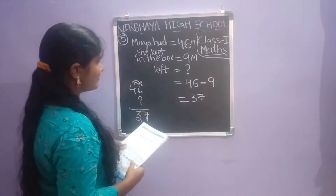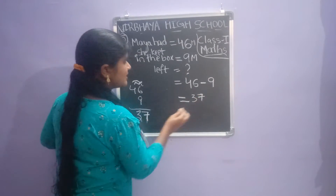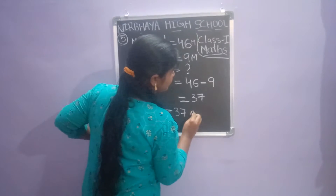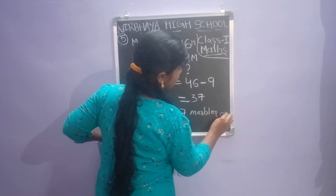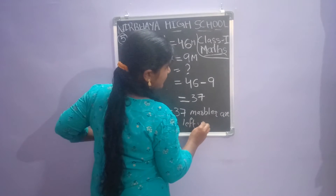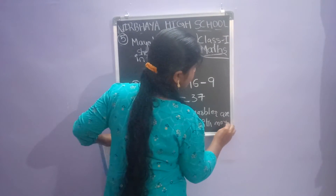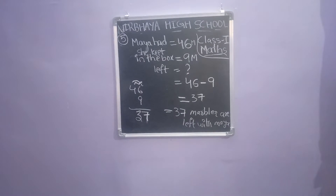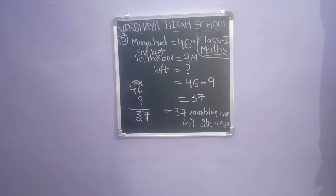So 46 minus 9 equals 37. Maya is left with 37 marbles. This is the answer — 37 marbles are left with Maya. Copy in your classwork children.